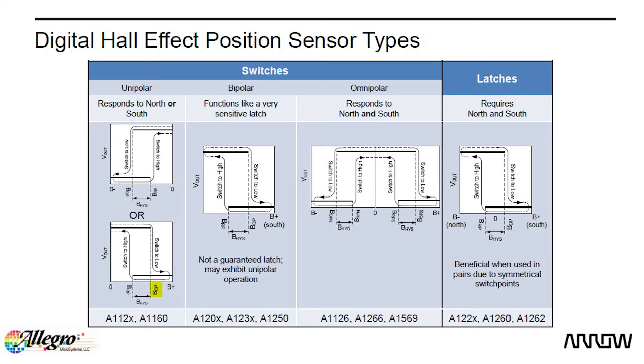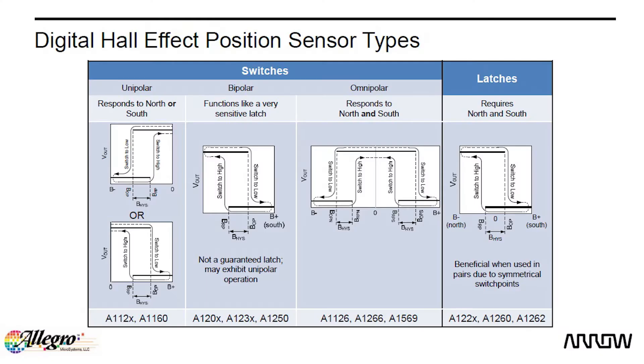Two fundamental parameters expressed in Gauss in data sheets are BOP, which means Magnetic Operate Point — the magnetic flux density at which a sensor output becomes active — and BRP, the Magnetic Release Point, which is the magnetic flux density at which a sensor output becomes inactive. For Unipolar and Omnipolar switches, BOP and BRP have the same sign, unlike the Bipolar version where BOP has the inverse sign of BRP.